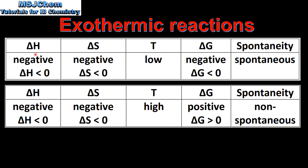In our next two examples we have a negative delta H, so they are both exothermic reactions, and we also have a negative delta S, which is a decrease in entropy. If the temperature is low then delta G will be negative and the reaction will be spontaneous.